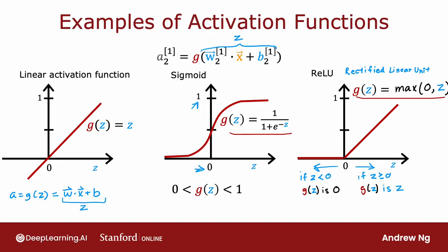There's one other activation function, which is worth mentioning, which is called the linear activation function, which is just g(z) equals z. Sometimes if you use the linear activation function, people will say we're not using any activation function because if a is g(z), where g(z) equals z, then a is just equal to this w dot x plus b. And so it's as if there was no g in there at all. So when you are using this linear activation function, g(z), sometimes people will say we're not using any activation function. Although in this class, I will refer to using the linear activation function rather than no activation function. But if you hear someone else use that terminology, that's what they mean. It just refers to the linear activation function. And these three are probably by far the most commonly used activation functions in neural networks.